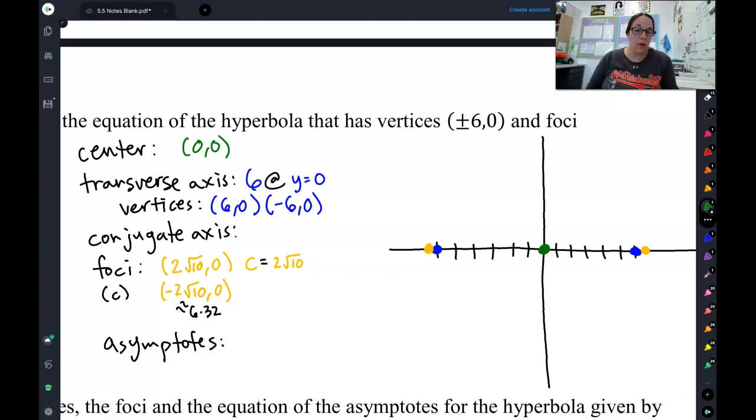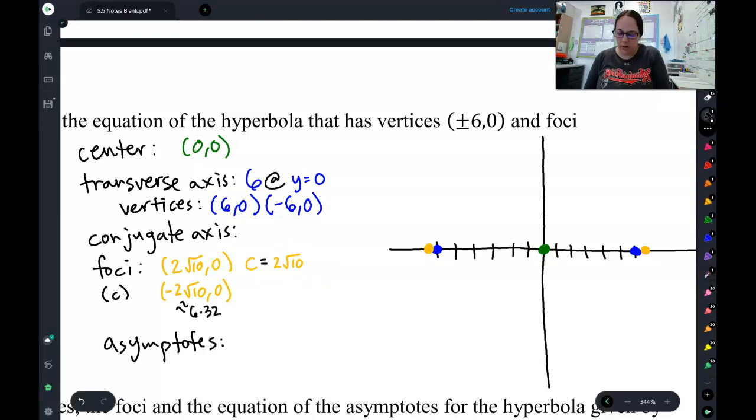So, we know a lot of stuff just from those two little pieces of information. It looks like we still need to figure out the conjugate axis and the asymptotes. Let's think about how we can find the conjugate axis. We can use something similar we did with ellipses by using our C equation to work backwards.